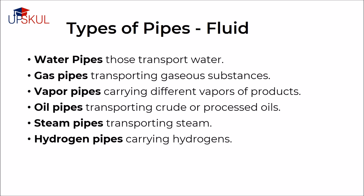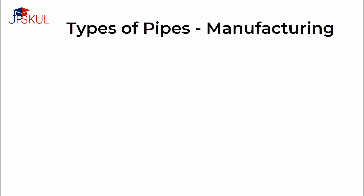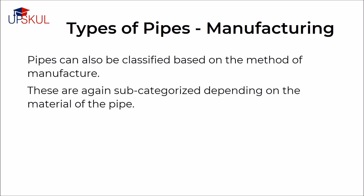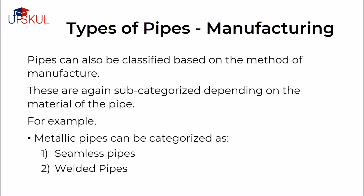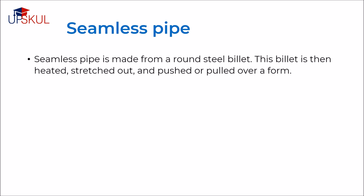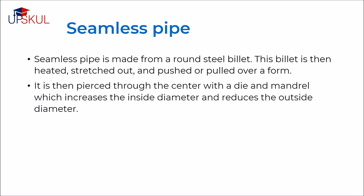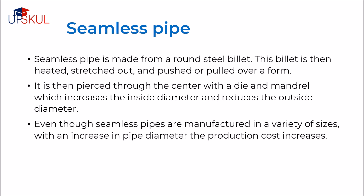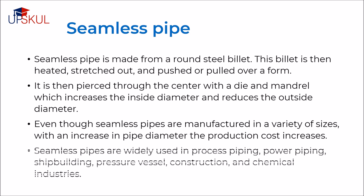Pipes can also be classified based on the method of manufacture. These are again sub-categorized depending on the material of the pipe. For example, metallic pipes can be categorized as seamless and welded pipes. Seamless pipes are made from a round steel billet, a solid cylindrical chunk of steel that is cast from raw material. This billet is then heated, stretched out and pushed or pulled over a form. It is then pierced through the center with a die and mandrel which increases the inside diameter and reduces the outside diameter. Seamless pipes are widely used in process piping, power piping, ship building, pressure vessels, construction, and chemical industry.